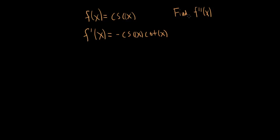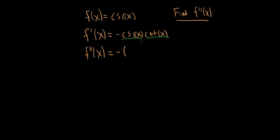But we want to find f double prime, so we differentiate f prime. f double prime of x — this is a product of two functions: cosecant and cotangent. Don't forget about that negative sign out front. I'm going to factor it out using the constant multiple rule, like a negative one, and then use the product rule.